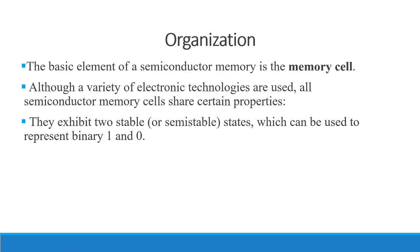We have semiconductor memory: RAM and ROM. We use semiconductor materials with different technologies. The properties they exhibit include two stable states — you can directly see the stable states or single states, as well as semi-stable states. Binary 0 or 1 can be represented.